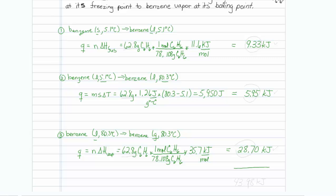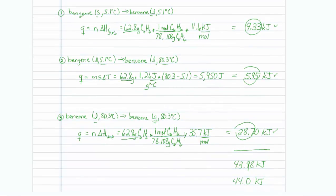The last step is to take these three values — 9.33, 5.95, and 28.70 kilojoules — and add them together. The sum is 43.98 kilojoules. Considering significant figures, three sig figs apply to all values. The result to the tenths place should be reported as 44.0 kilojoules.